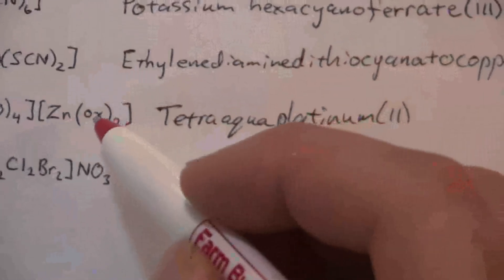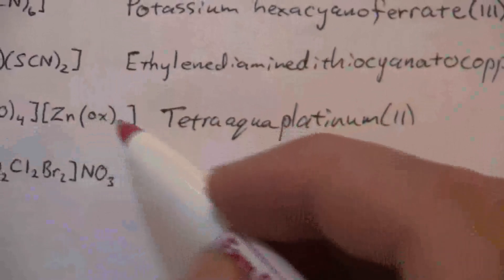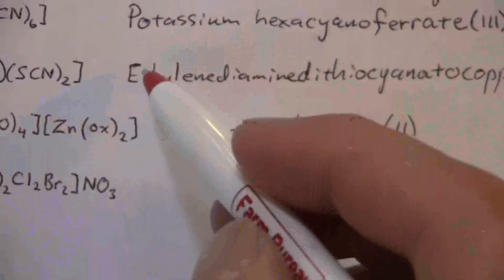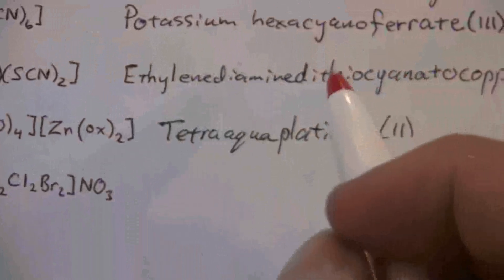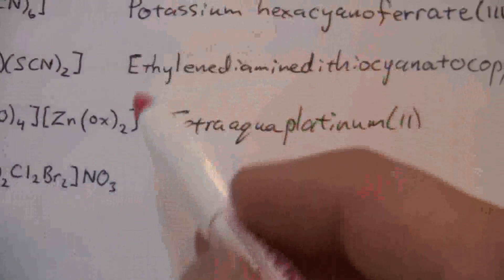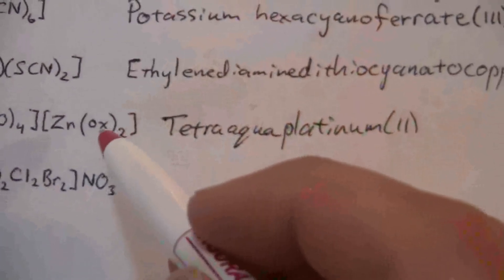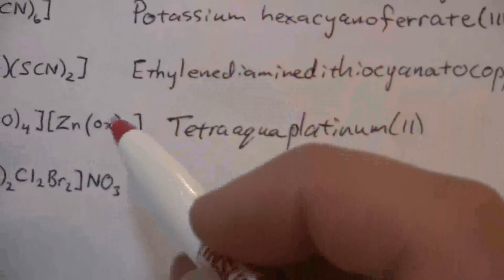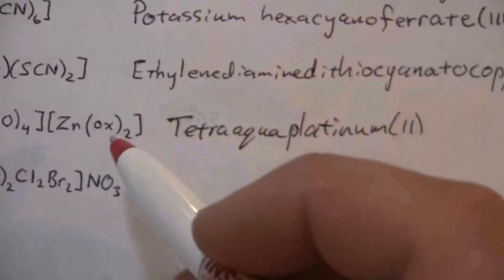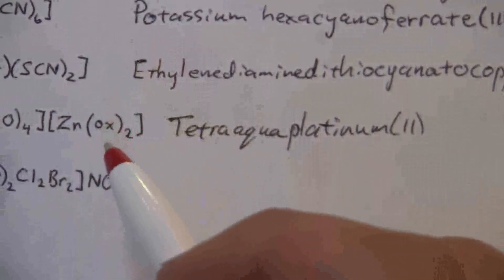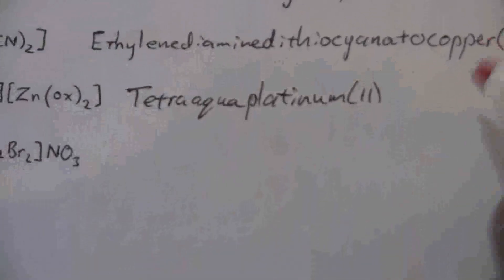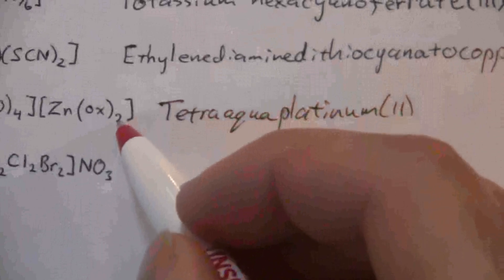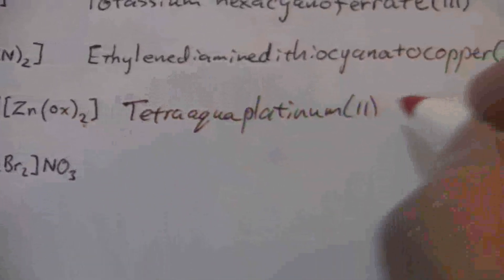In this case, oxalate is one of those cases where it meets the second rule that we just talked about with regard to the prefixes. Oxalate in the name doesn't have a prefix, but oxalate is bidentate. Therefore, we're going to use bis to indicate that we have two of those oxalate ions.